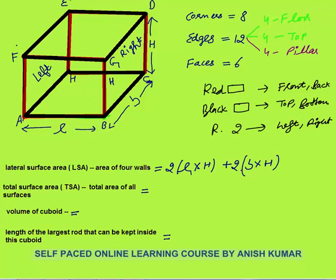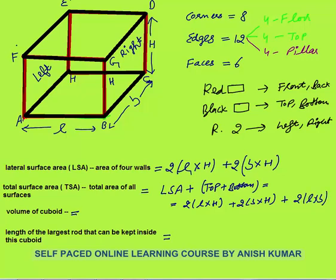When we say total surface area, we need to include the bottom surface as well as the top surface. Total surface area equals lateral surface area plus top and bottom area. Lateral surface area is 2LH + 2BH. The bottom surface area is L into B, and since the top and bottom surfaces are congruent, we add twice of L into B.